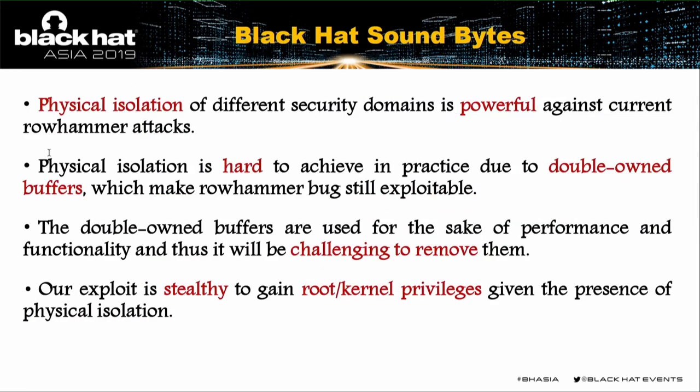Last, our takeaways: physical isolation is powerful against current Rowhammer attacks. However, it is hard to achieve in practice due to the double-ownership buffers. These hammerable buffers exist for performance and functionality reasons and are challenging to remove. So even facing user-kernel physical isolation, our exploit is still able to gain root and kernel privileges. That's all for our talk — thank you very much.